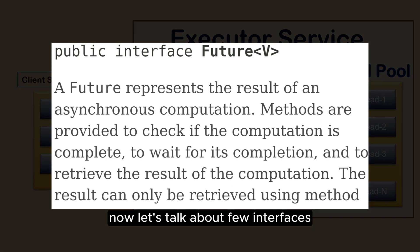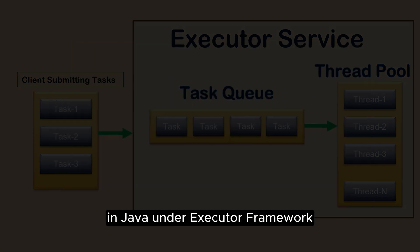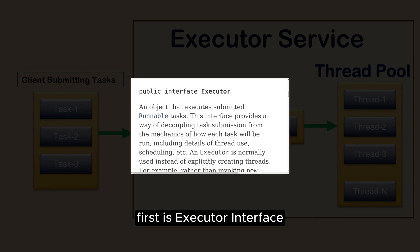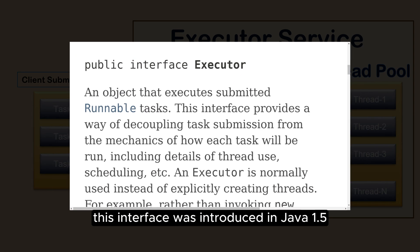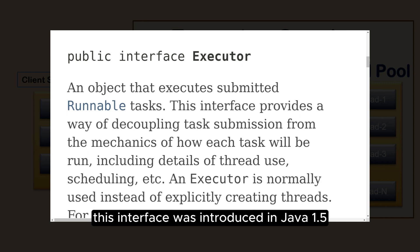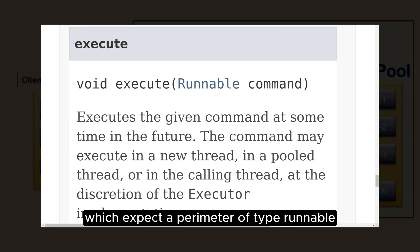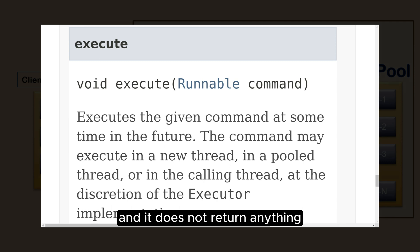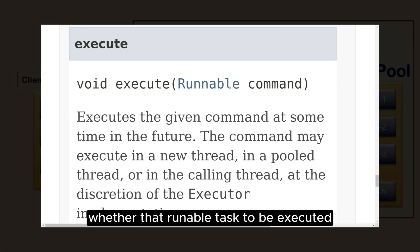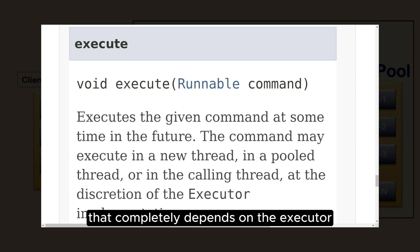Now let's talk about a few interfaces available in Java under the executor framework. First is the Executor interface. This interface was introduced in Java 1.5. It contains a single method, execute, which expects a parameter of type Runnable and does not return anything. Whether that Runnable task is to be executed in a new thread or from a pooled thread completely depends on the executor implementation you will be using.